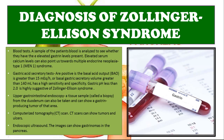For diagnosis, the first approach is a blood test where a sample of the patient's blood is analyzed to check for an elevated gastrin level. Elevated serum calcium levels can also point toward MEN type 1. All patients with Zollinger-Ellison syndrome will have increased gastrin levels, but only 25% will also have elevated calcium, as individuals with MEN type 1 can present with hypercalcemia. Gastric acid secretory tests are positive if the basal acid output (BAO) is greater than 15 milliequivalents per hour or the basal gastric secretory volume is greater than 140 milliliters.